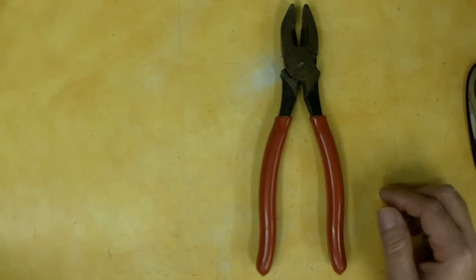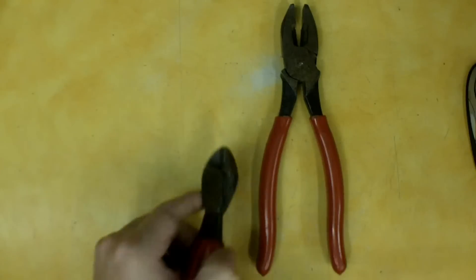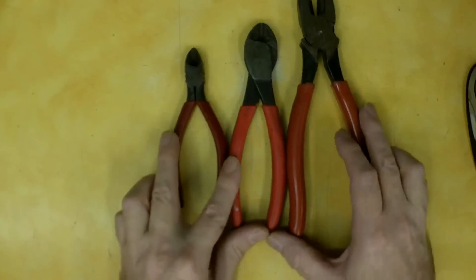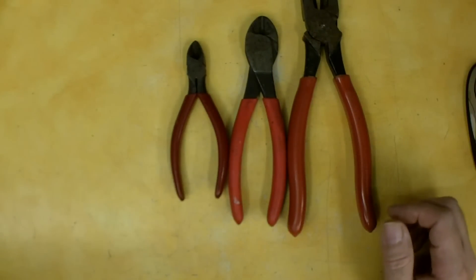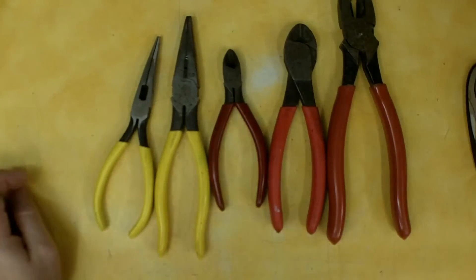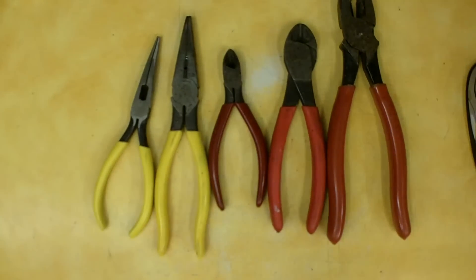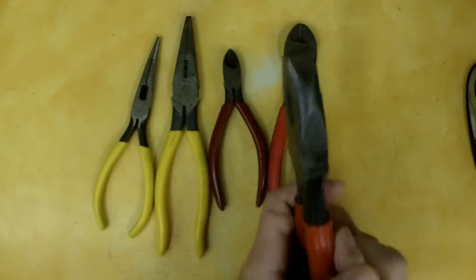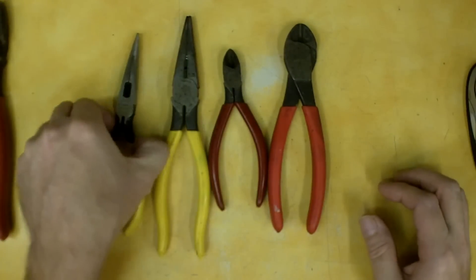Lineman's pliers. A couple pair of dykes or diagonals. However you want to call them. I call them dykes. A couple pair of needle nose. All Klein. All great. No complaints at all.